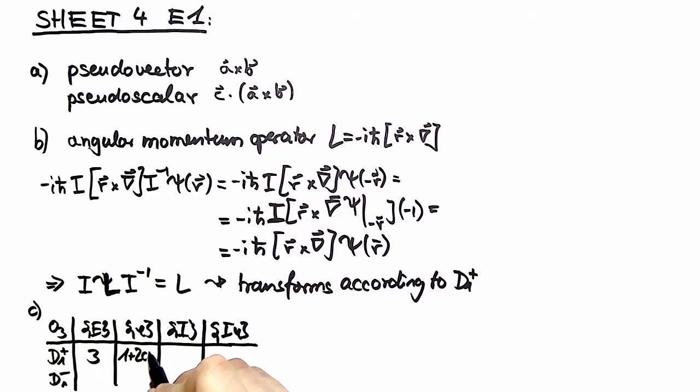Here you have only plus one, so the identity element has character number three. You have one plus two times cosine phi. You have again three because you have the same sign, and again one plus two times cosine phi. With minus D1 minus, you have exactly the opposite here: minus three and minus one plus two times cosine phi.